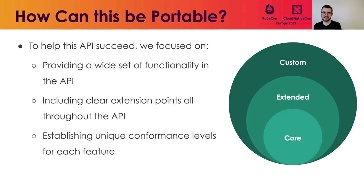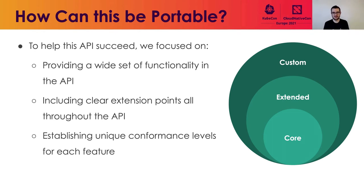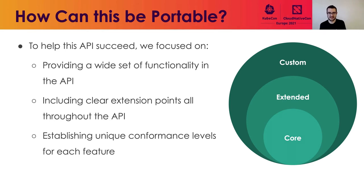So how can we really make this portable? We have a pretty big goal of covering a broad surface area and still making it portable. First, we do want that wide set of functionality in the core API. But we also want to ensure that whatever doesn't fit in the core API is easy to add in — either through custom route types or ways to extend existing types that we already have. We have custom filters and extension points throughout different resources, as well as patterns to extend the API by attaching policy or other types of resources.